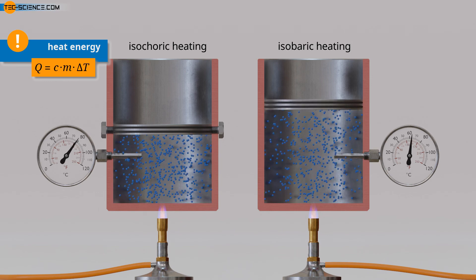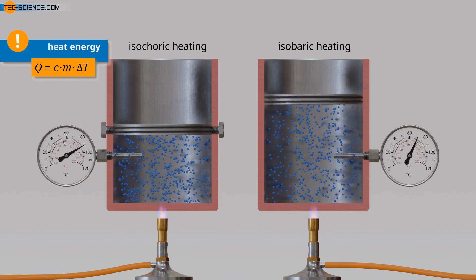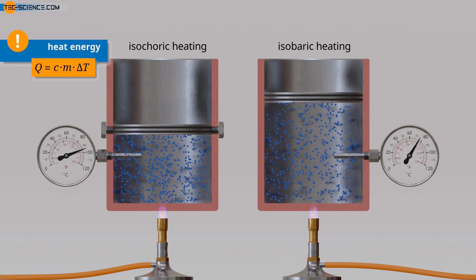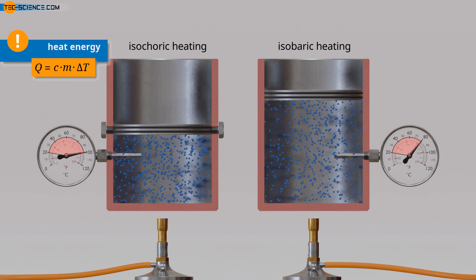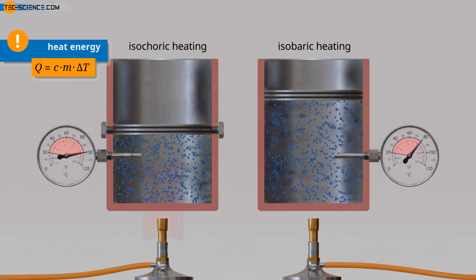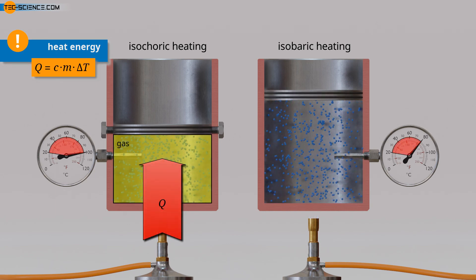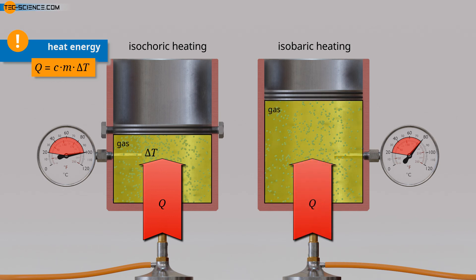If the same heat is supplied in both cases, it will be seen that the temperature change is smaller in the isobaric case. In the case of isochoric heating, the transferred heat energy completely benefited the kinetic energy of the molecules, which could thus be fully used to increase the temperature. In the isobaric case, however, the gas had to expand against external forces during heating.